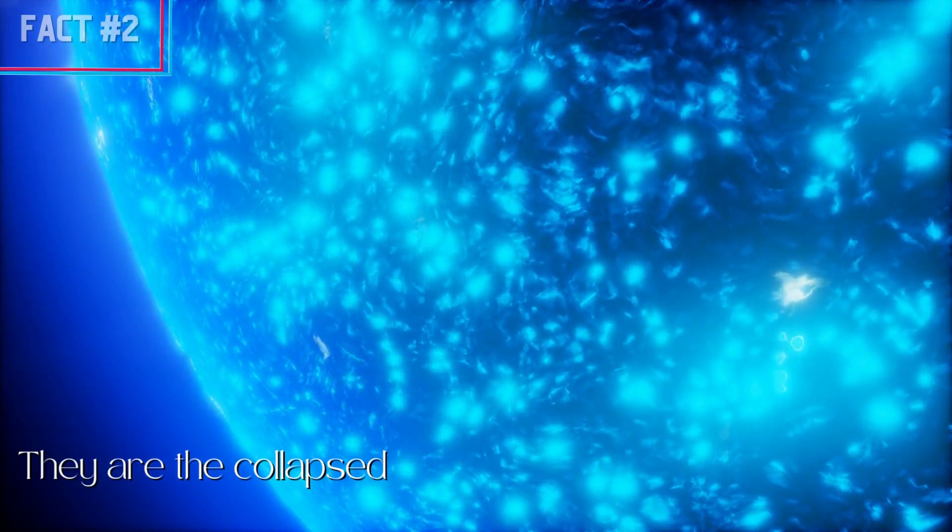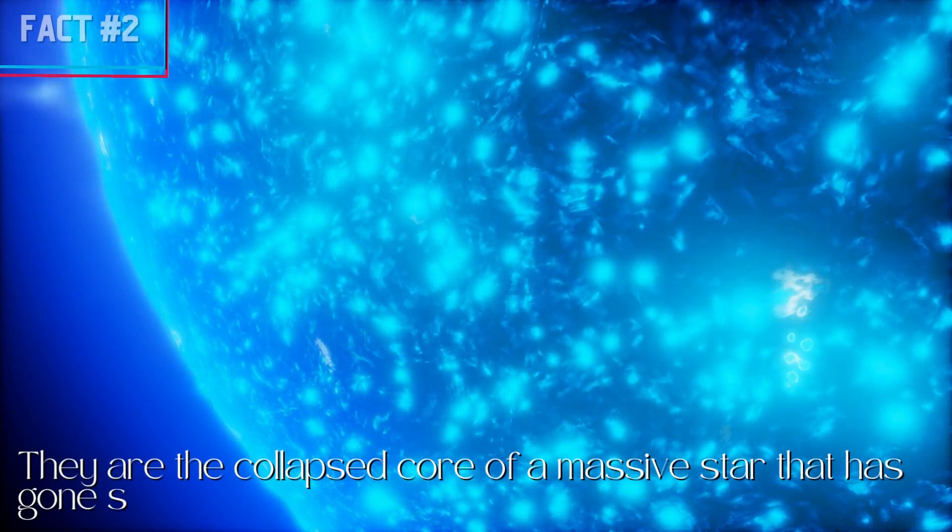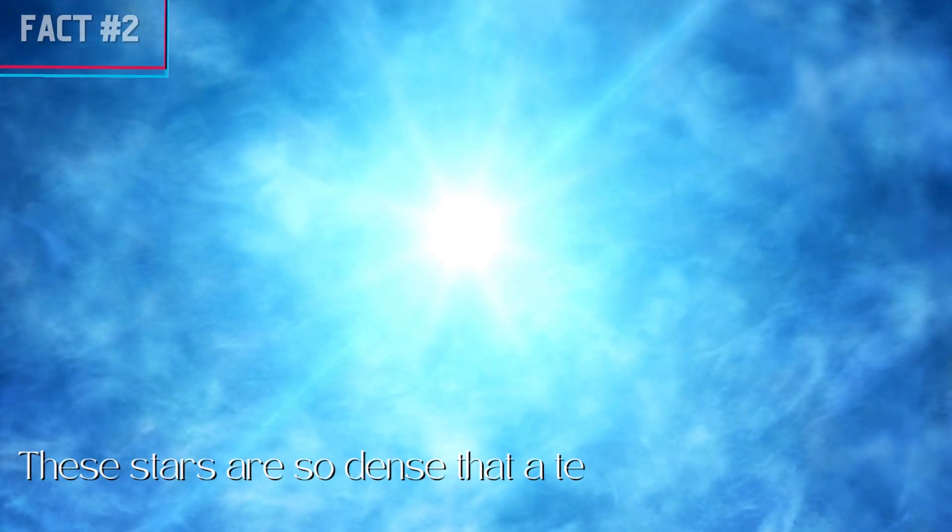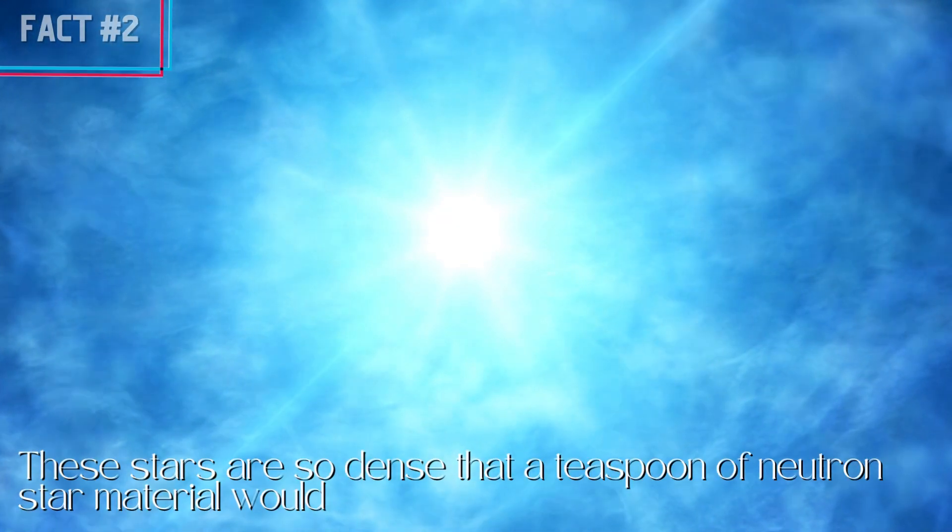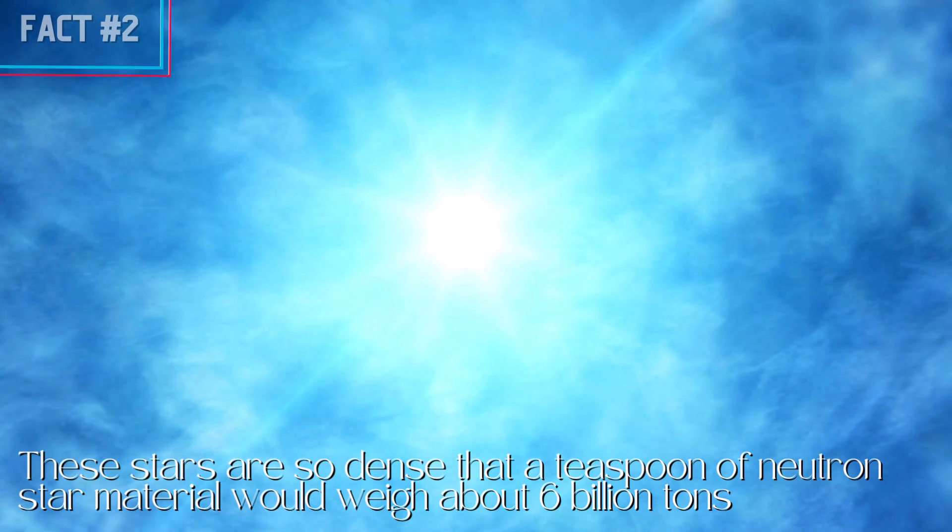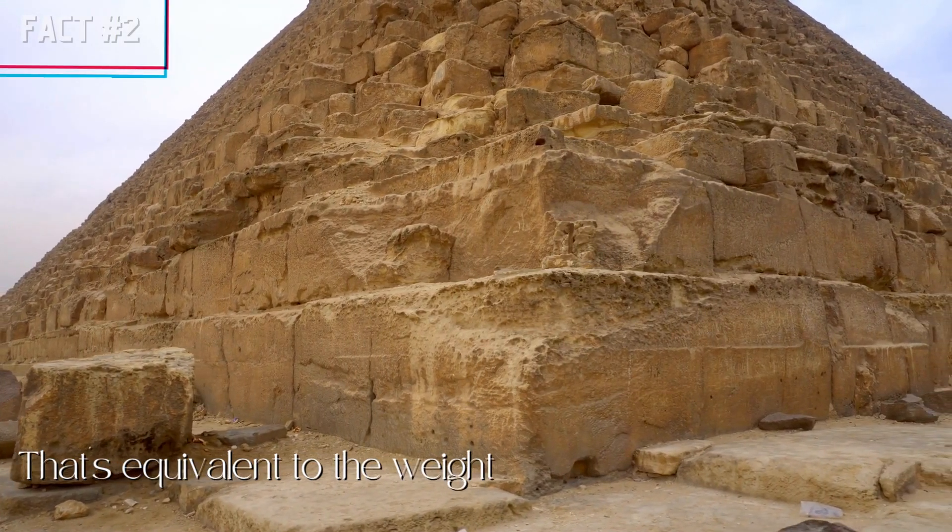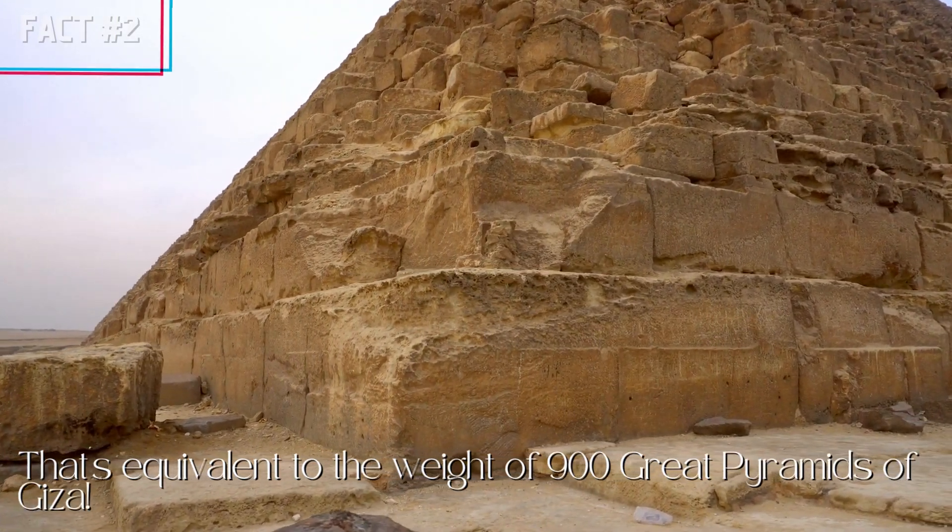They are the collapsed core of a massive star that has gone supernova. These stars are so dense that a teaspoon of neutron star material would weigh about 6 billion tons. That's equivalent to the weight of 900 great pyramids of Giza.